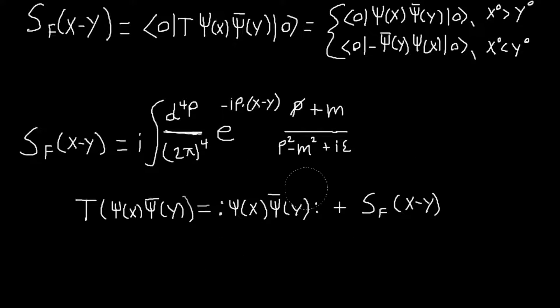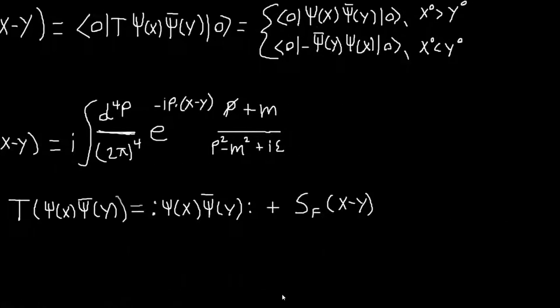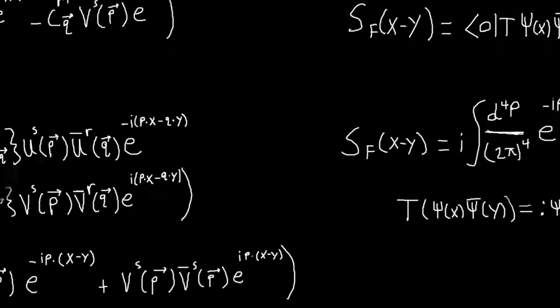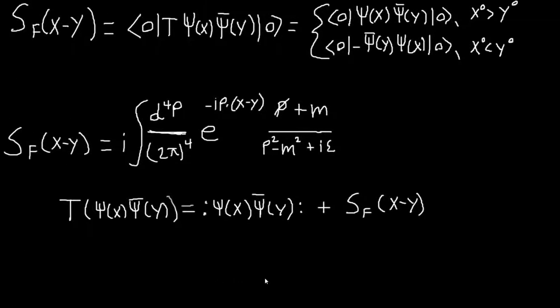And again, so an important thing to remember is that, unlike in the scalar theory, here all of our operators will anti-commute under the time ordering operator and the normal ordering operator. So that'll be important to remember when you're manipulating things, otherwise you'll mess up the minus signs. So I think that's basically all we need, and we can continue on and just do some scattering.